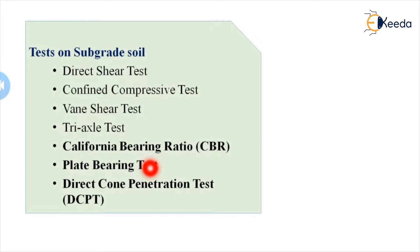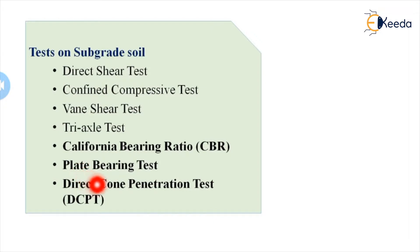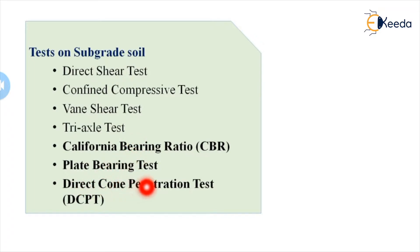From a highway perspective, three tests play a major role in evaluation of subgrade soil: California Bearing Ratio (CBR), Plate Bearing Test (Plate Load Test), and Direct Cone Penetration Test. The first two — CBR and plate bearing test — will be explained in detail. I will give a brief introduction to the direct cone penetration test.